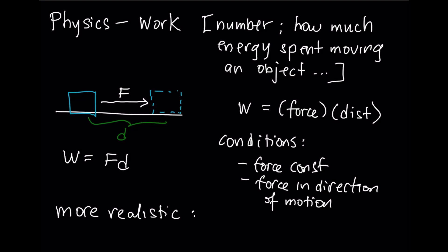We're going to consider a concept from physics called work. Work is just a number and it tells you how much energy you've spent moving an object from one location to another. You may have learned a simple formula to calculate work where it's just the product of force times distance. Now there are some conditions for that to be true — in particular, the force has to be constant and in the direction that you're moving the object.